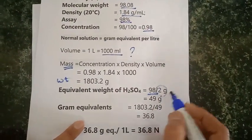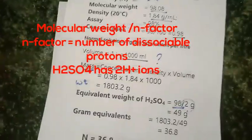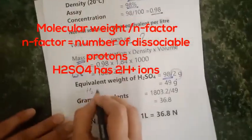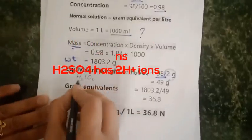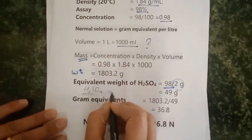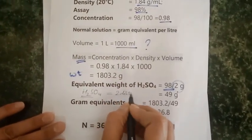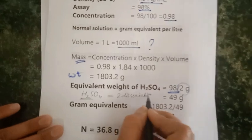How we can calculate n factor for H2SO4: this H2SO4 has two dissociable protons, therefore its n factor is 2. So 98 divided by 2 gives us 49.